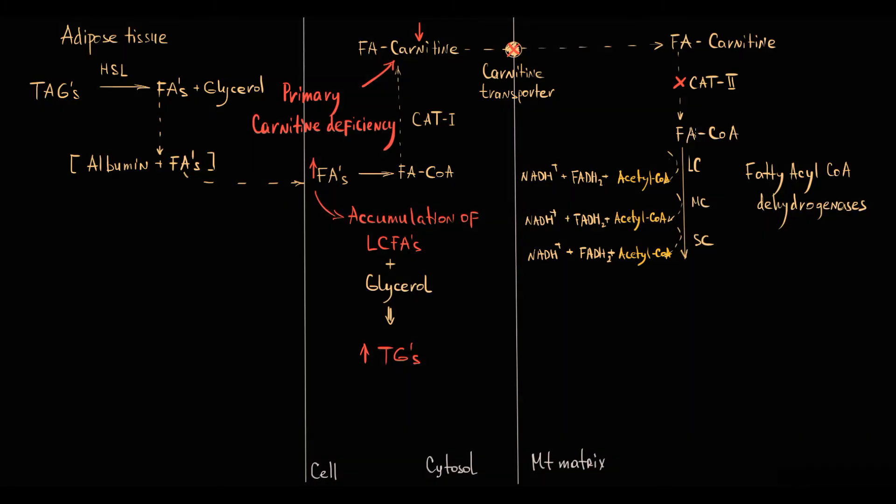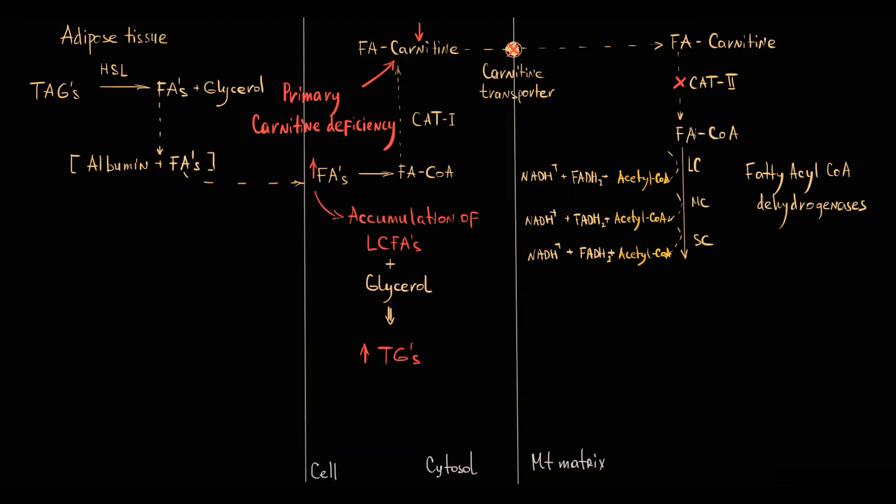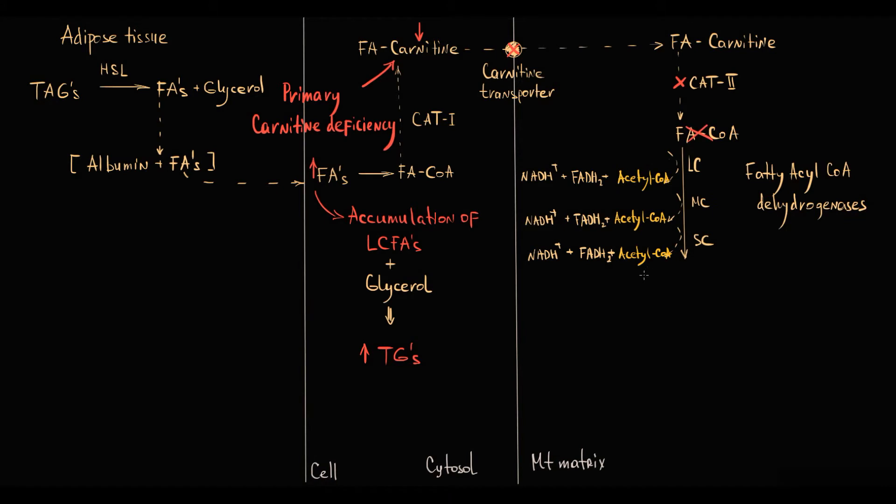Without fatty acids transportation, mitochondria does not have any fatty acids to oxidize at all. So mitochondria cannot produce acetyl-CoA, and without acetyl-CoA, Krebs cycle does not work, and this results in severe decrease in energy production.